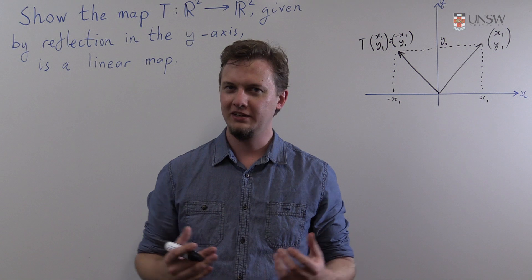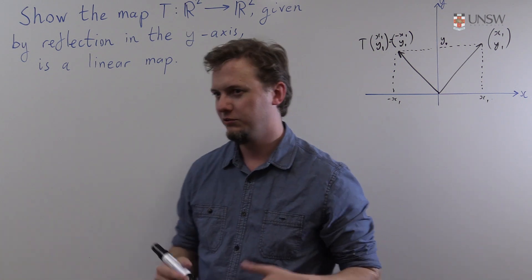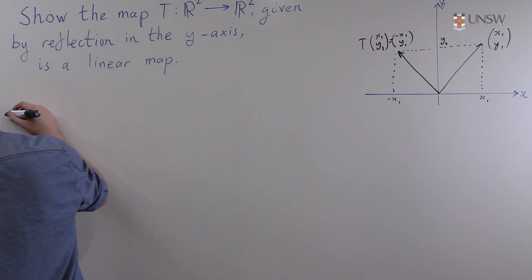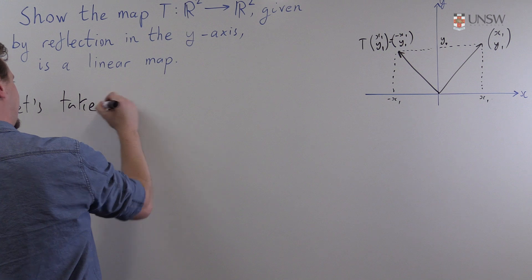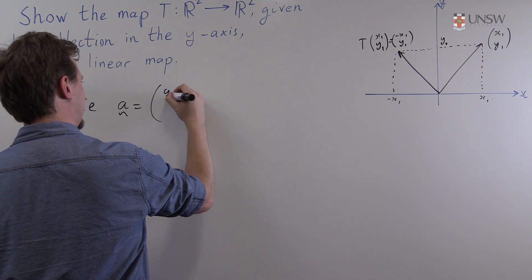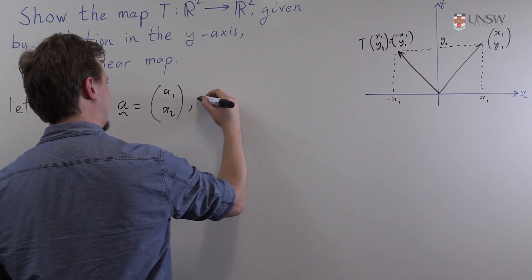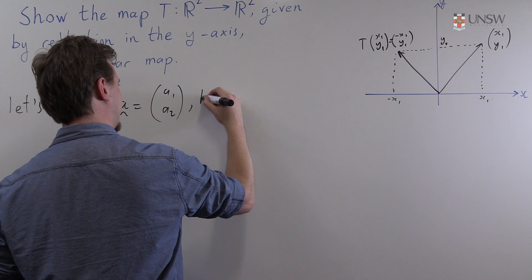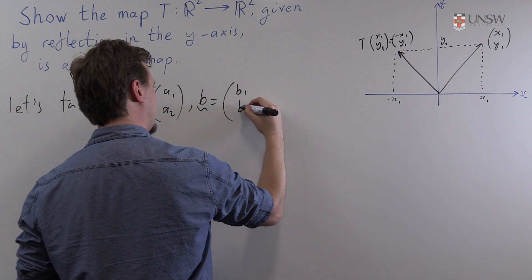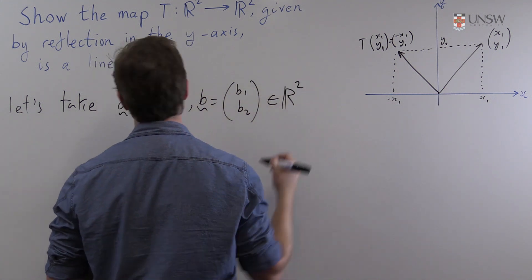So there are two conditions we need to check but thankfully we can do these using just one test. So to set up for this test let's take two vectors from R², say a which is the vector whose components are a₁, a₂, and the vector b whose components are b₁ and b₂, both elements of R².